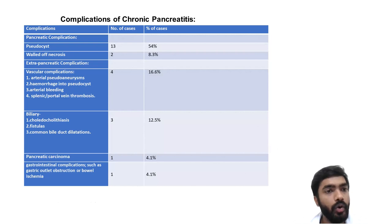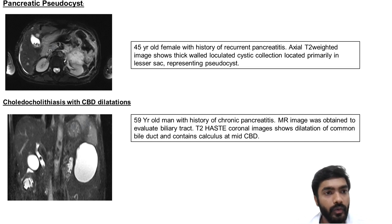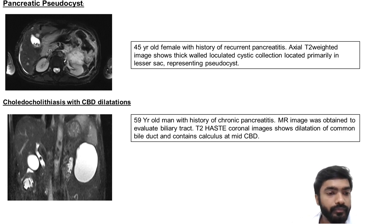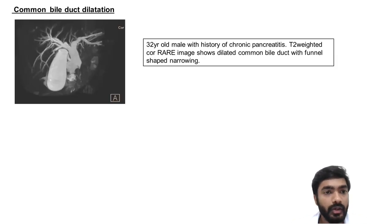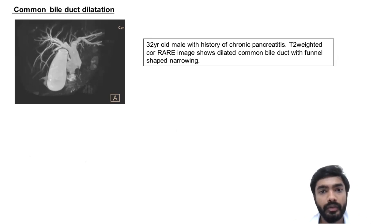Findings: pseudocyst in 13 patients, areas of necrosis in 2 patients, and extra-pancreatic complications including vascular complications in 4, biliary complications in 3, and pancreatic carcinoma in 1. A case of pancreatic pseudocyst with incidental gallstones and recurrent pancreatitis: axial T2-weighted image shows a thick-walled loculated cystic lesion in the lesser sac representing a pseudocyst. In a 59-year-old man with chronic pancreatitis, common bile duct dilatation with a stone was seen; coronal images show dilatation of the common bile duct containing a calculus. In another patient, T2-weighted images show dilated common bile duct with funnel-shaped narrowing.